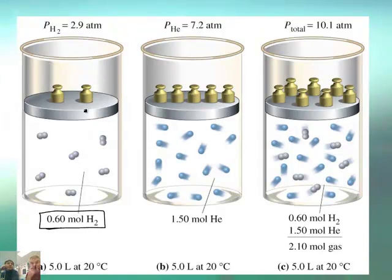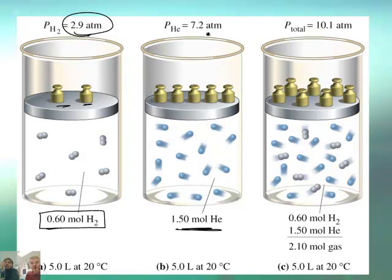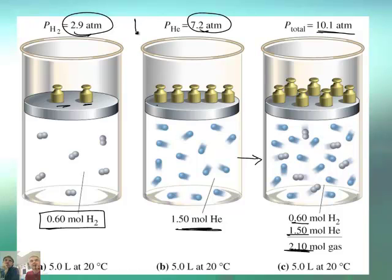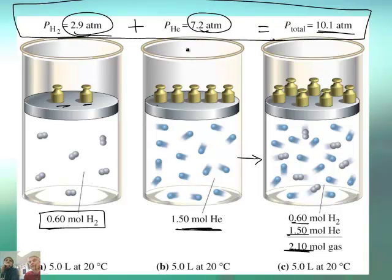Here's a way to look at it mathematically. We have 0.6 moles of hydrogen gas in a container with a pressure of 2.9 atmospheres. And then we have 1.5 moles of helium gas — more moles of gas, so therefore more pressure — with a pressure of 7.2 atmospheres. Now if you mix the gases, you have 0.6 plus 1.5, which gives you 2.1 moles. Keeping the volume the same, you now have 10.1 atmospheres. And if you take 2.9 plus 7.2, it equals 10.1.